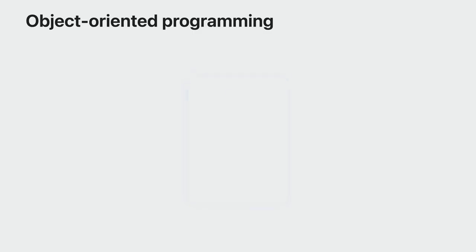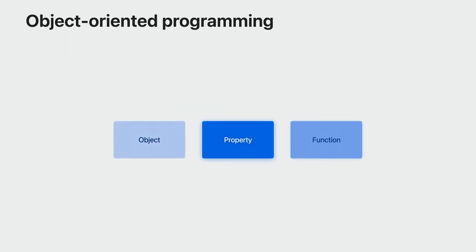Entities are a part of ECS, which stands for Entity Component System. ECS is what powers RealityKit and RealityComposer Pro. ECS has some close parallels to object-oriented programming, but is different in some key ways.